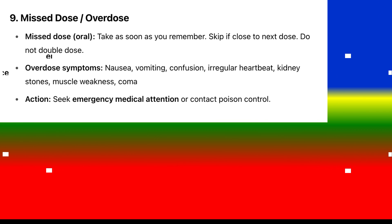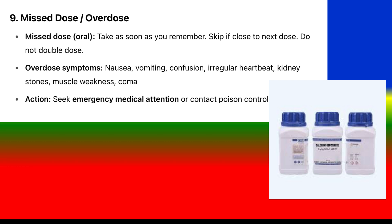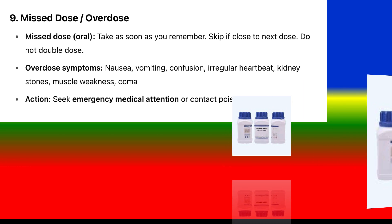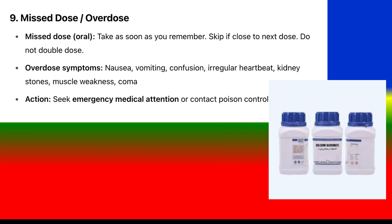Missed dose and overdose: If a dose is missed (oral), take as soon as you remember; skip if close to next dose; do not double dose. Overdose symptoms include nausea, vomiting, confusion, irregular heartbeat, kidney stones, muscle weakness, and coma. Seek emergency medical attention or contact poison control immediately.